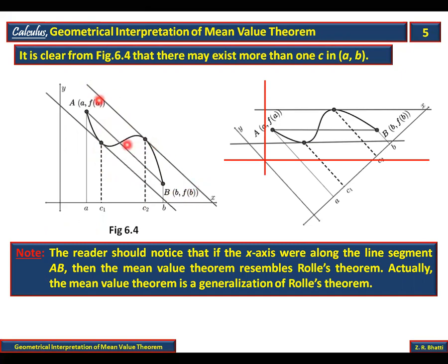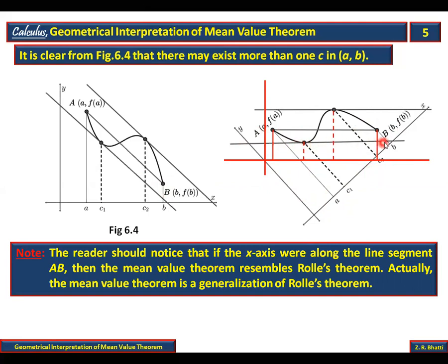This line joining the endpoints is parallel to the x-axis. After rotation, if you look at Rolle's Theorem — A is at one end, then C1, C2, and B. Rolle's Theorem states that if its conditions are satisfied, there will be a point between A and B where the tangent is parallel to the x-axis. So the Mean Value Theorem is actually a generalization of Rolle's Theorem.